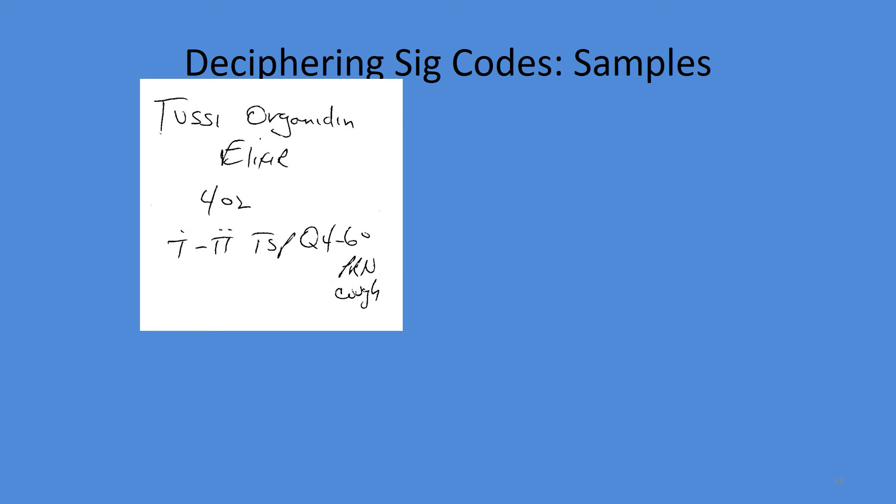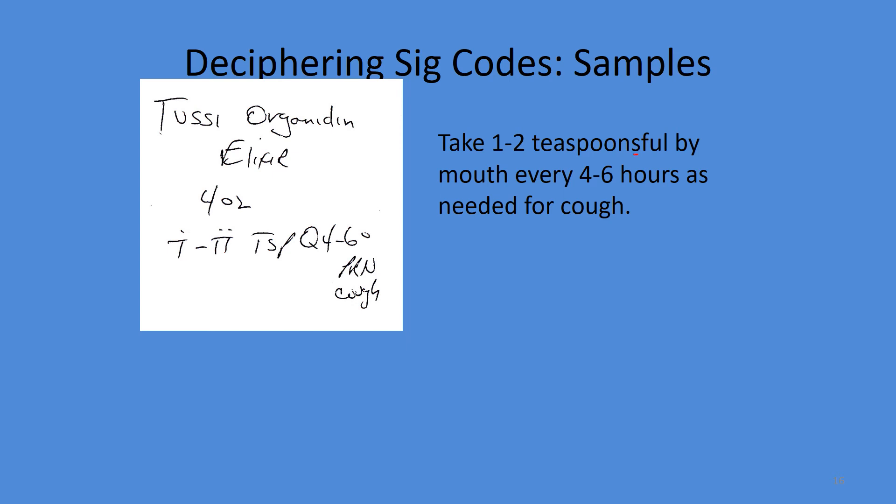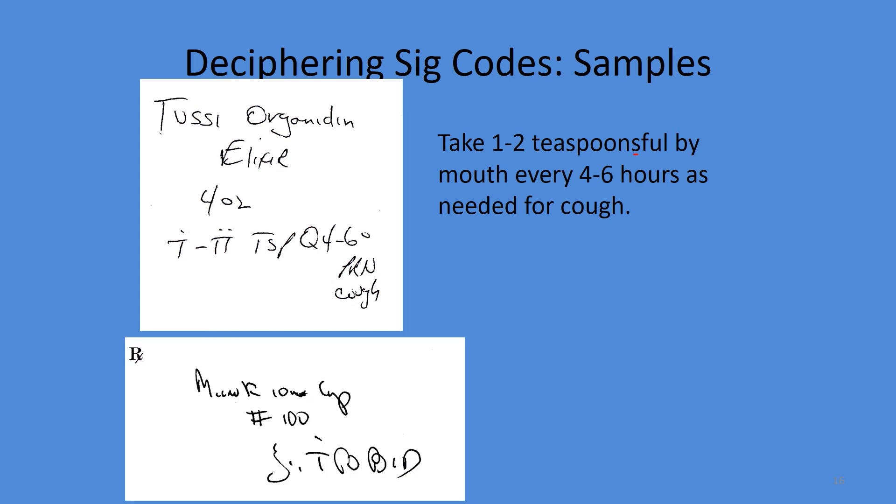Next is an elixir — giving four ounces. Sig: one to two teaspoons q4 to 6 hours PRN cough. There is no route written, but we know this is by mouth. Translation: take one to two teaspoonsful by mouth every four to six hours as needed for cough.